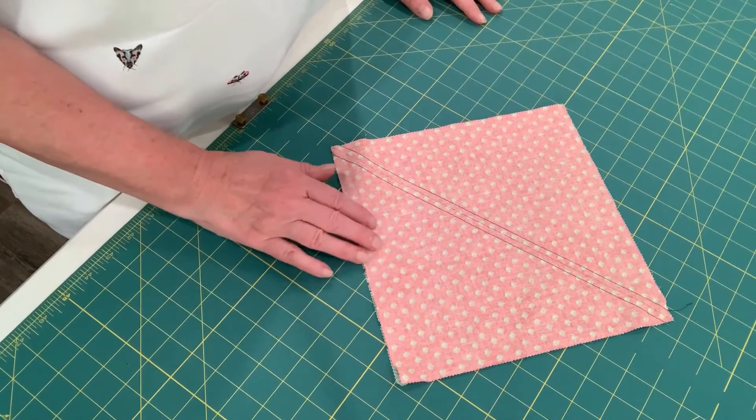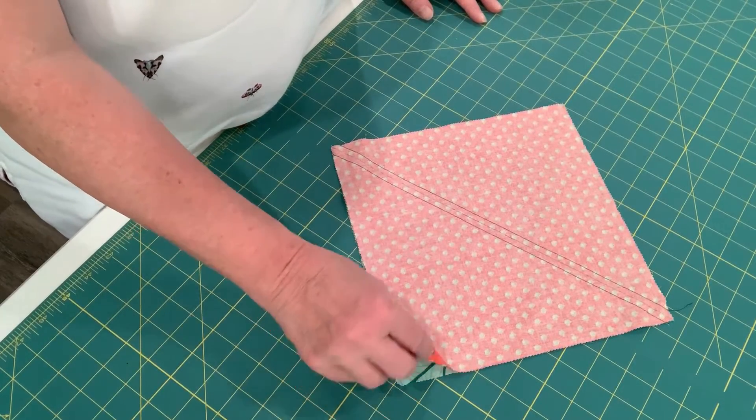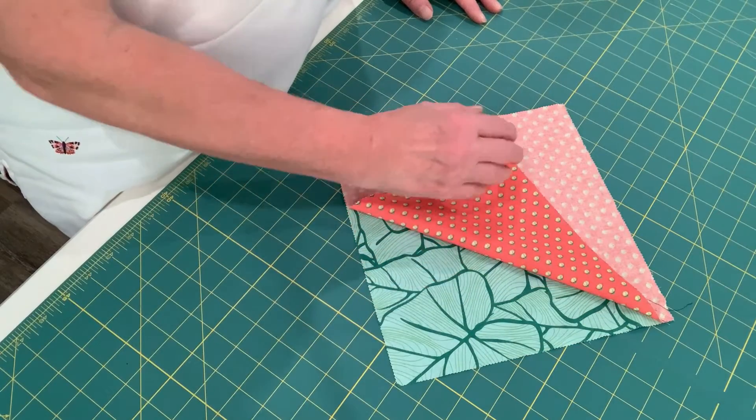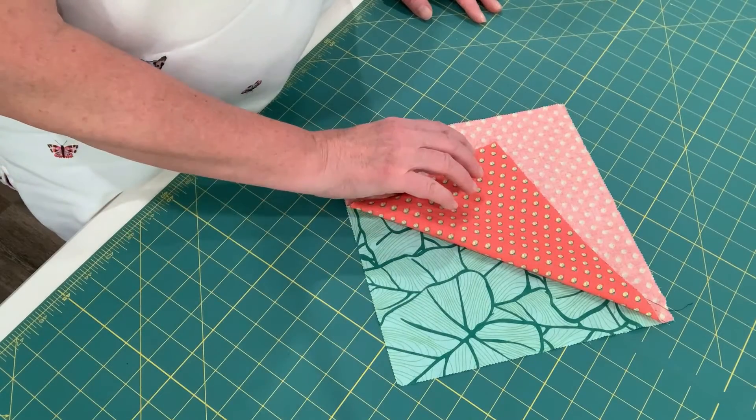On the table, I have two layer cake squares. They're 10 inch squares, and they come in packages from different fabric lines, usually with one piece of every fabric in the line in the package.